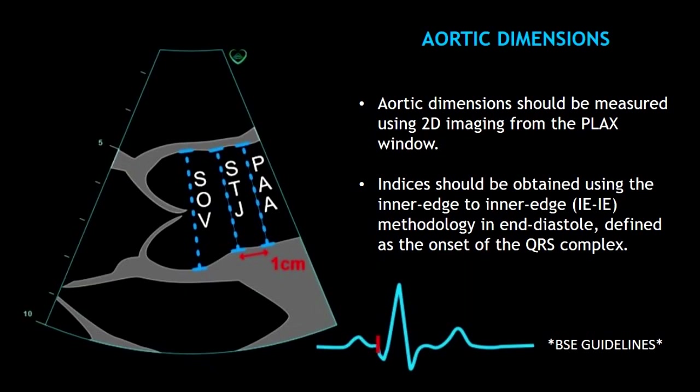Before you measure any aortic dimensions you should know the following. Aortic dimensions should be measured using 2D imaging from the parasternal long axis window. According to the BSE guidelines, we have to do these measurements at the end of diastole using the inner edge to inner edge method.